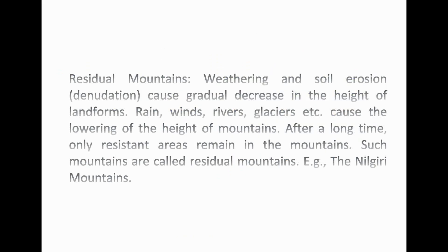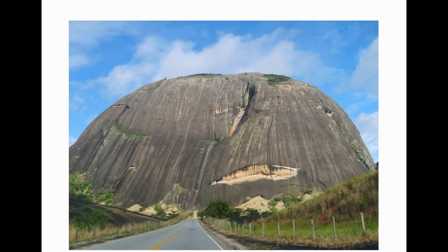Residual mountains: weathering and soil erosion cause a gradual decrease in the height of landforms. Rain, winds, rivers, and glaciers cause the lowering of the height of mountains. After a long time, only resistant areas remain in the mountains. Such mountains are called residual mountains. Example: the Nilgiri Mountains.